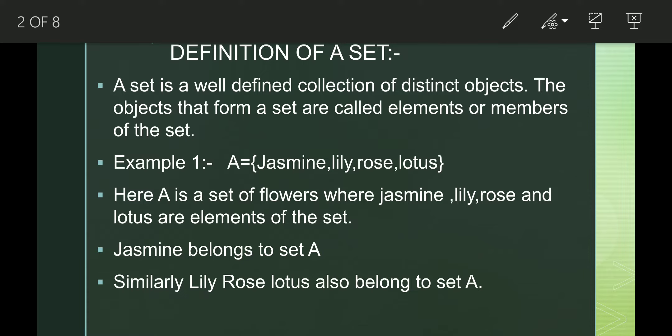Students, let us take an example. Example 1: A is a set that contains jasmine, lily, rose, lotus. Here, A is called a set and a set of flowers where jasmine, lily, rose and lotus are called the elements of the set.